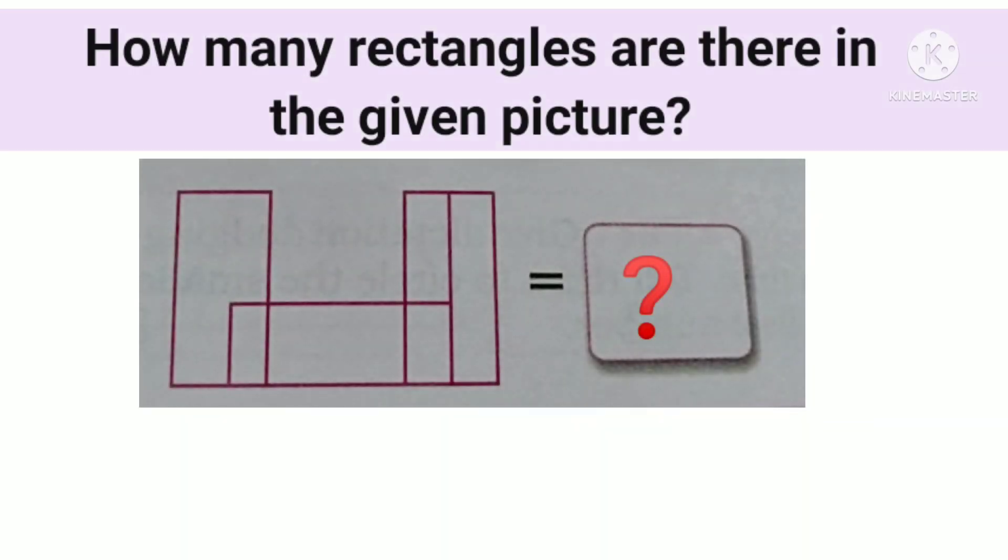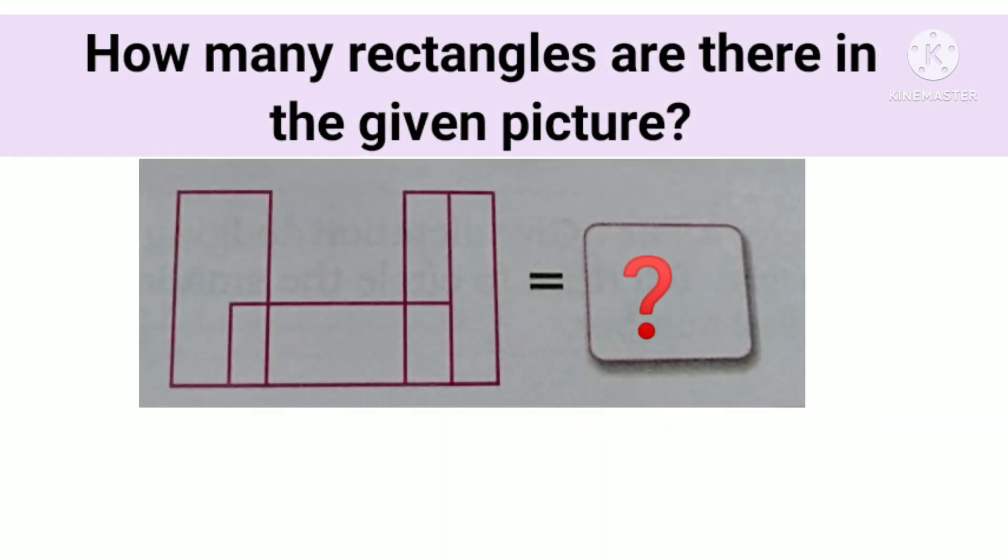Now question number 3. Here also observe the picture very carefully. And you have to say how many rectangles are there in the given picture. Again 4 options are given. You have to choose the correct one. You have to look at the diagram very carefully.